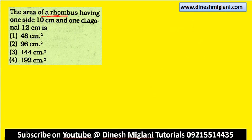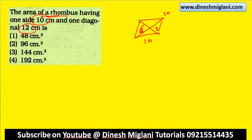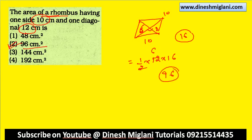Area of a rhombus: one side is 10 and one diagonal is 12. Find the other diagonal. Half of one diagonal = 6. Using Pythagoras: 10 squared minus 6 squared = 100 minus 36 = 64, so half the other diagonal = 8, meaning the other diagonal = 16. Area = half into product of diagonals = half into 12 into 16 = 96. Second one is my answer — area is 96 square centimeters.